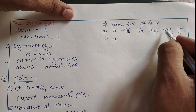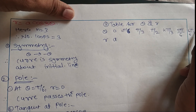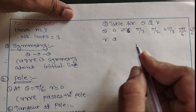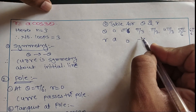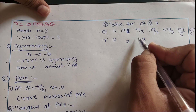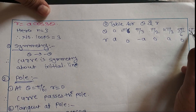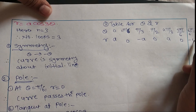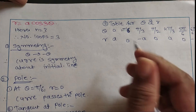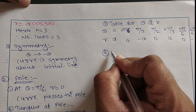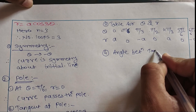Filling in the table: at θ = 0, r = a; at θ = π/6, r = 0; at θ = π/3, substituting gives cos(π) = -1, so r = -a; at θ = π/2, r = 0; at θ = 2π/3, r = a; at θ = 5π/6, r = 0; and at θ = π (6π/6), r = -a.